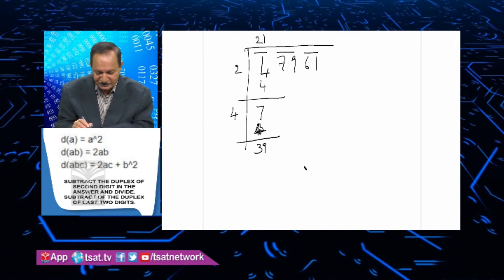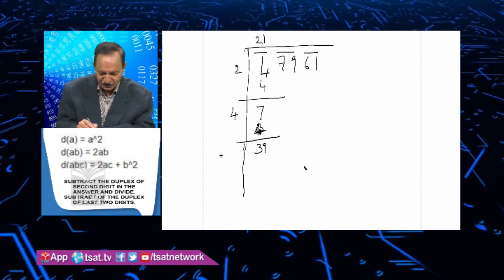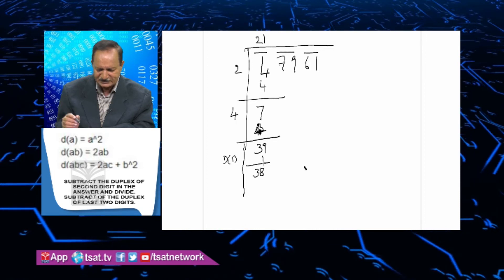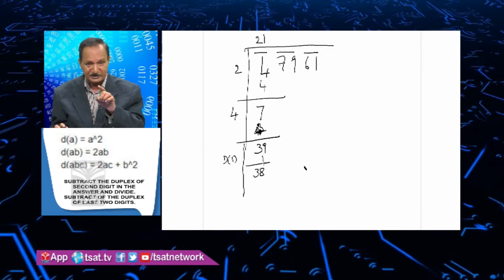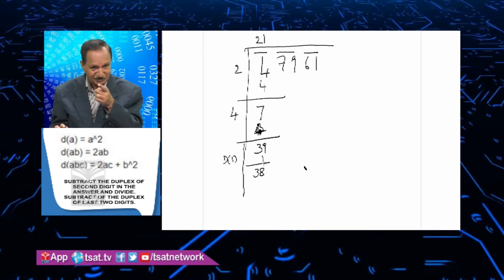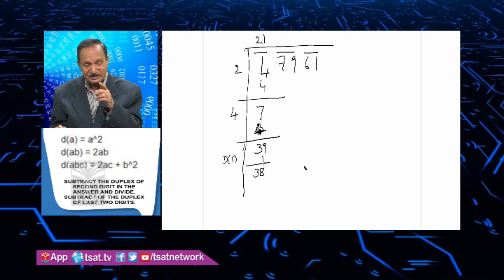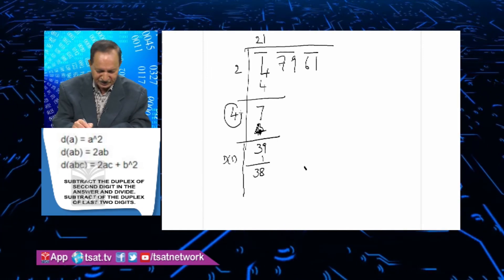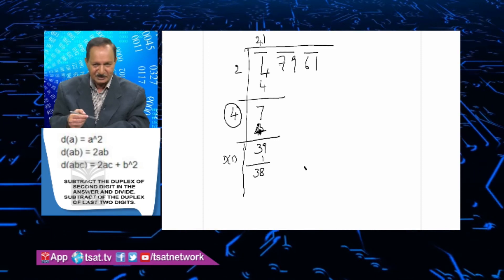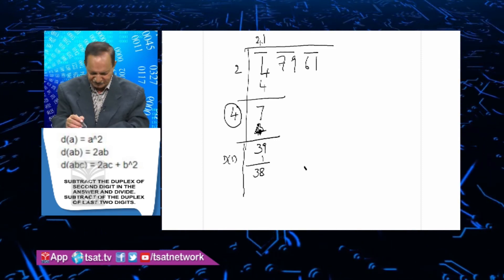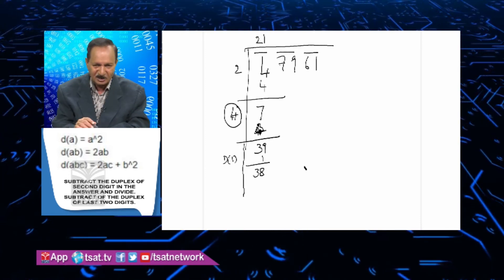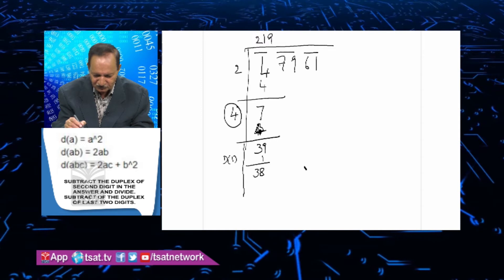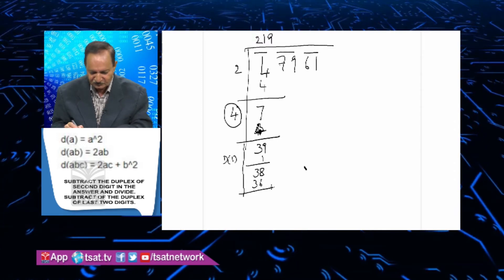Subtract the duplex of the second number in the answer and divide. What is this step? Duplex of the second number in the answer - the second number is 1. Duplex of 1 is 1. Subtract the duplex of 1 and divide. When you divide, you get 4 divided by 2, which gives 9 and remainder 36. That is the answer.